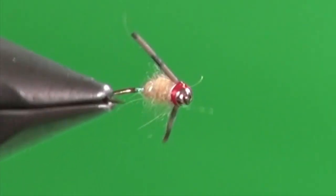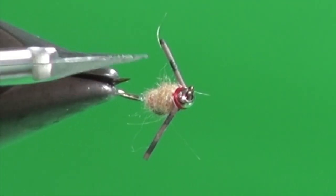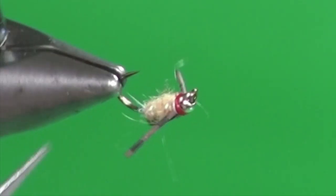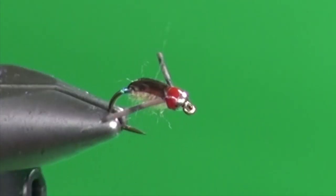We've got a few long strands there. We could certainly come in underneath if those bother you, but again to me those are going to help trap bubbles as well and just give the fly a bit of translucence. But there you have it, finished Tin Man.